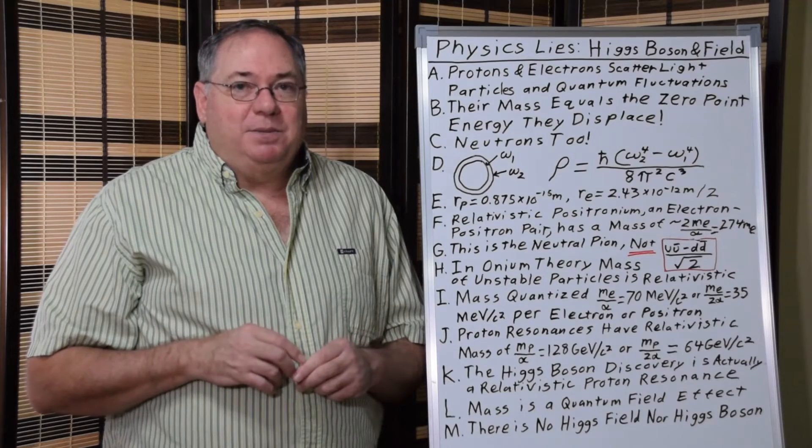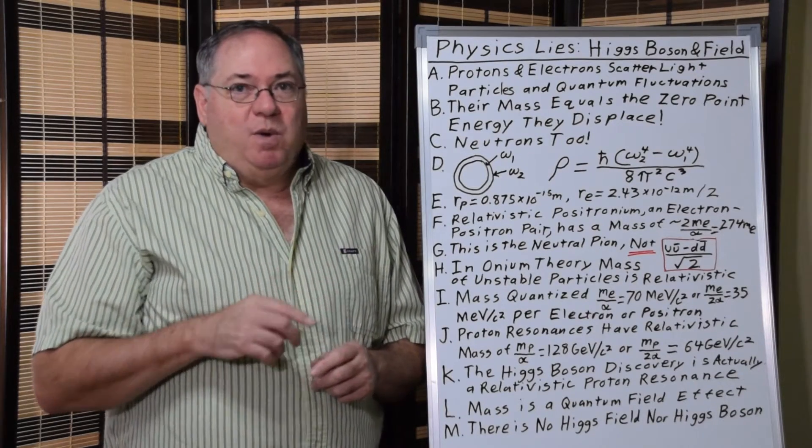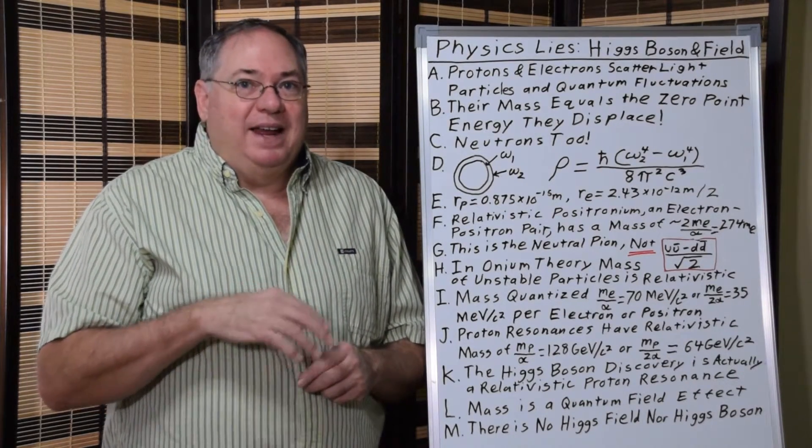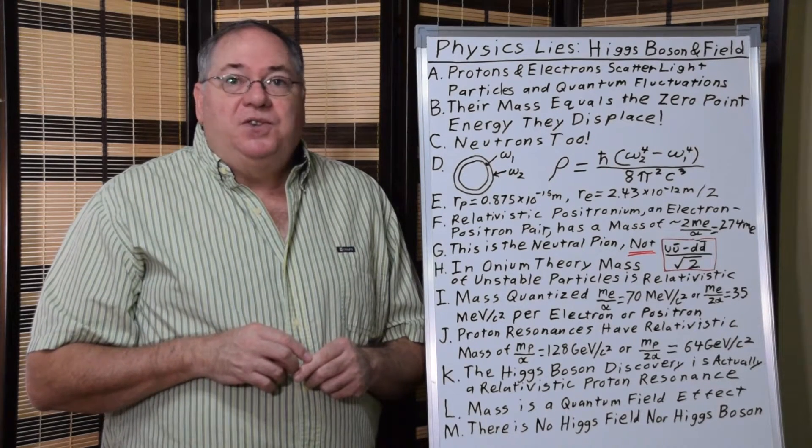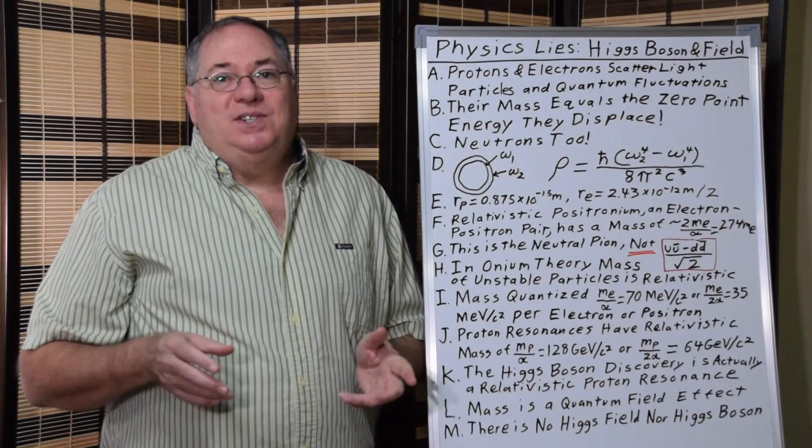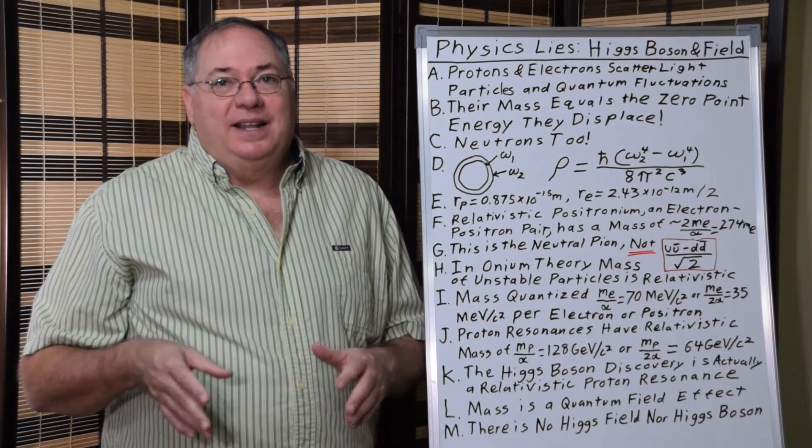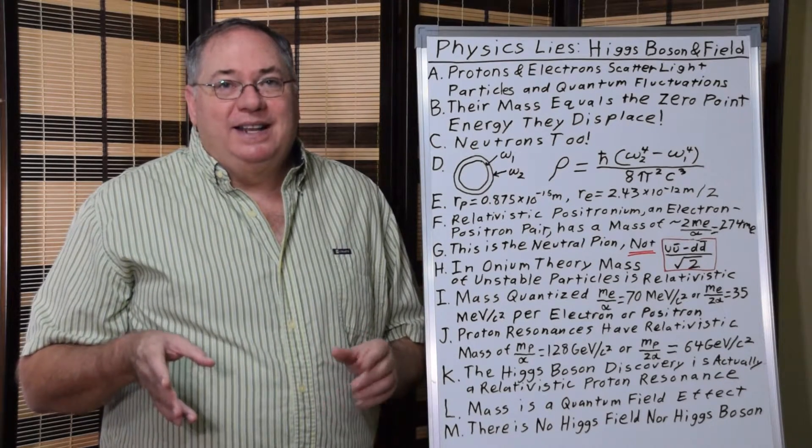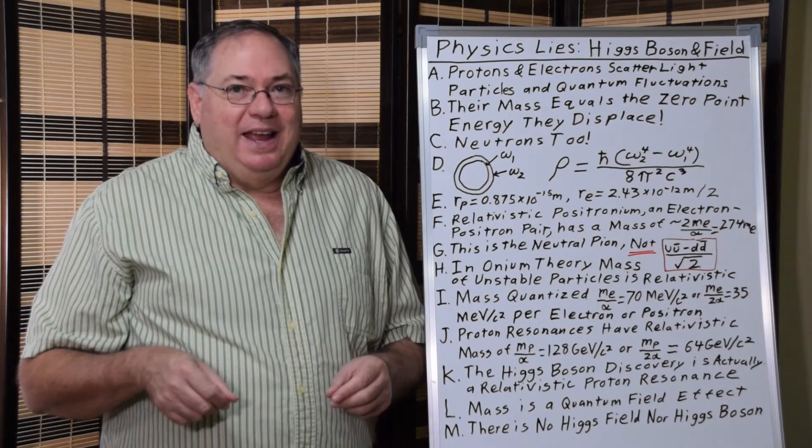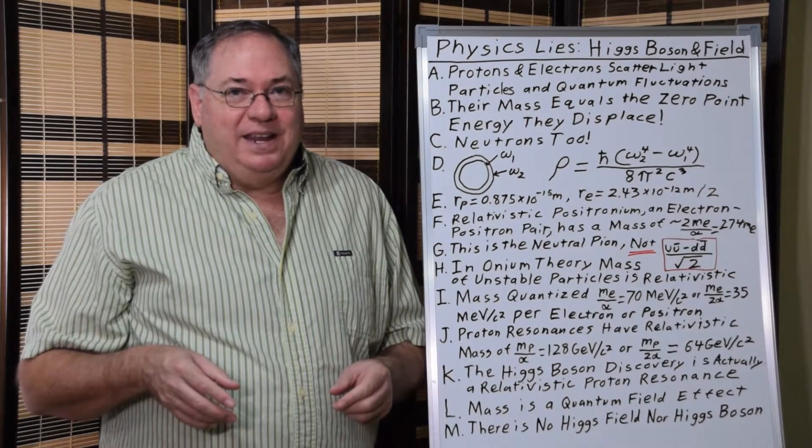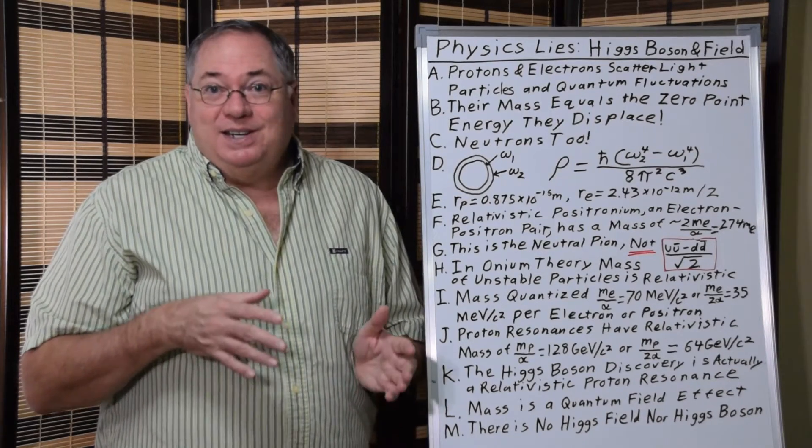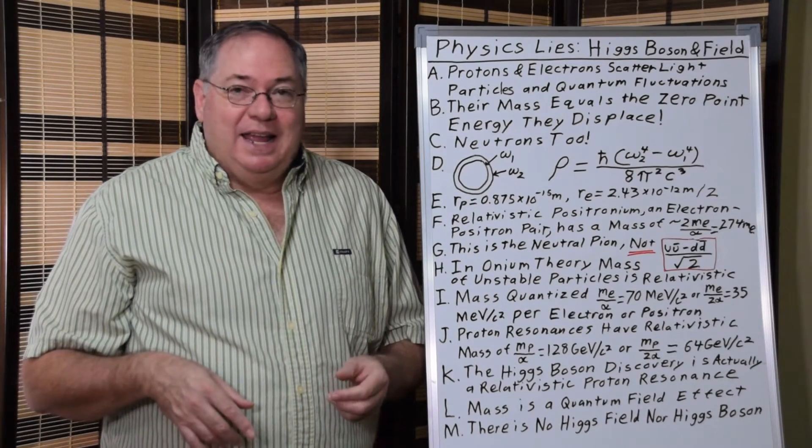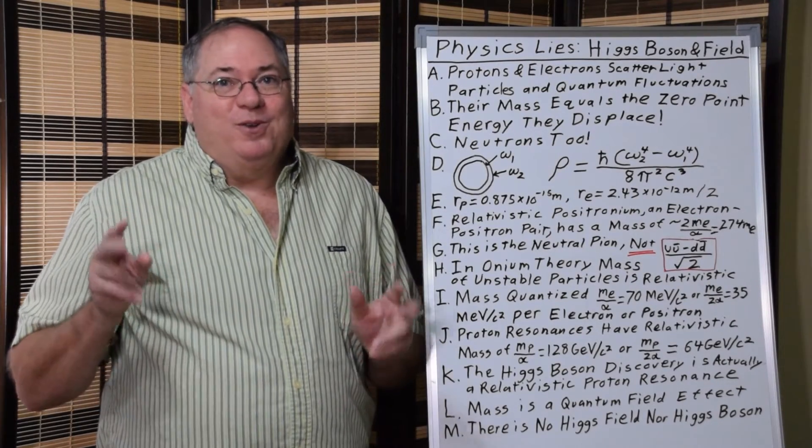Like with the neutral pion being a little bit less than the maximum energy, the mass of the so-called Higgs boson appears to be a little bit less than 128 GeV per C squared. But it's not a surprise. And there's also quantization at half that, at 64 GeV per C squared. And so what physicists think they discovered at the Large Hadron Collider at 125 GeV is a resonant relativistic proton. It's not a new particle.